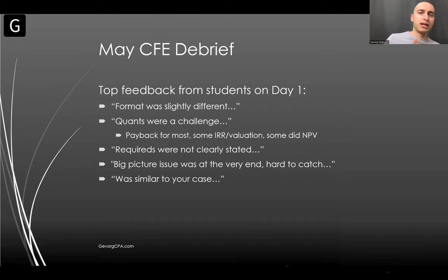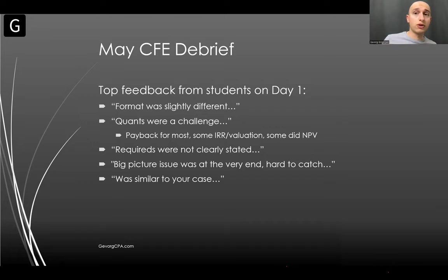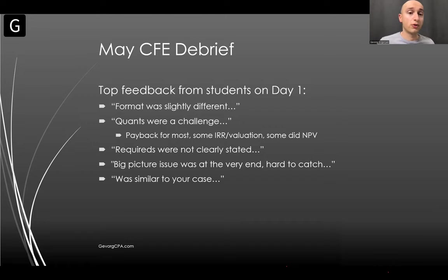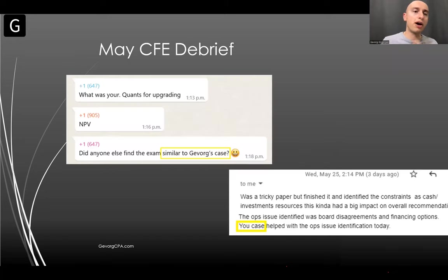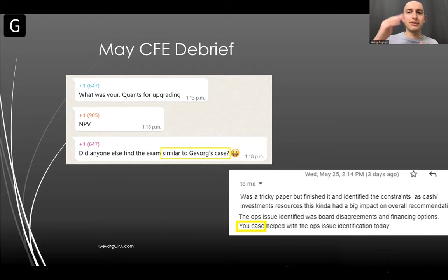Most thought payback should be done based on the nature of the question, but it was a little iffy figuring out exactly which quant to use. Requires were not clearly stated. The big picture — which is very hard to catch — was about a cash flow constraint, a pervasive issue in the entire case. You must find it and recognize it; otherwise you're not going to pass day one. A lot of people said it was very similar to my mock exam case.